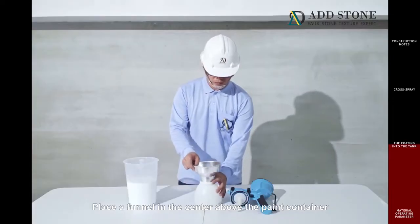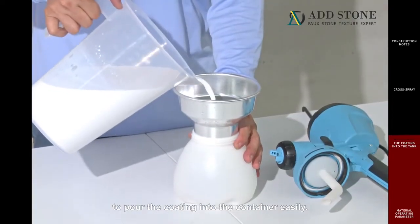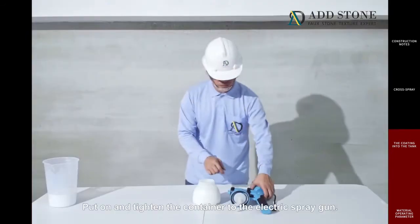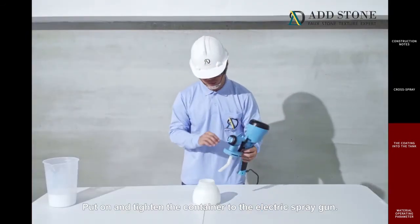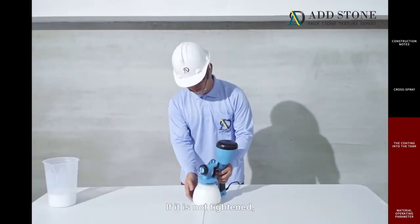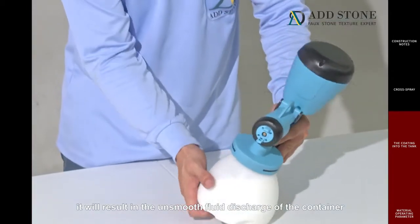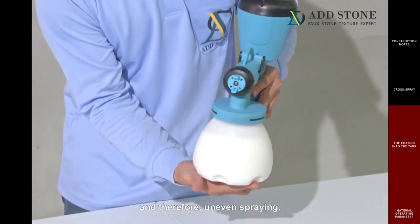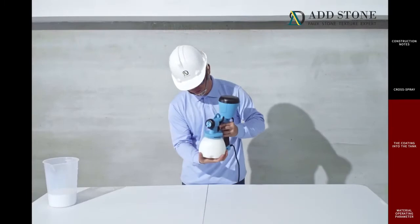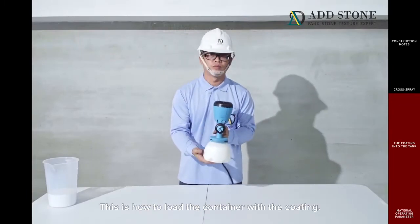Place a funnel in the center above the paint container to pour the primer into the container easily. Put on and tighten the container to the electric spray gun. If it is not tightened, it will result in unsmooth fluid discharge of the container and therefore uneven spraying. This is how to load the container with the primer.